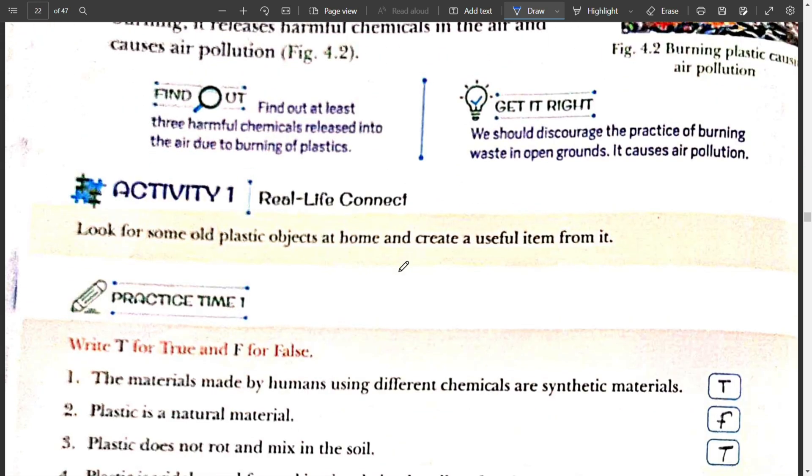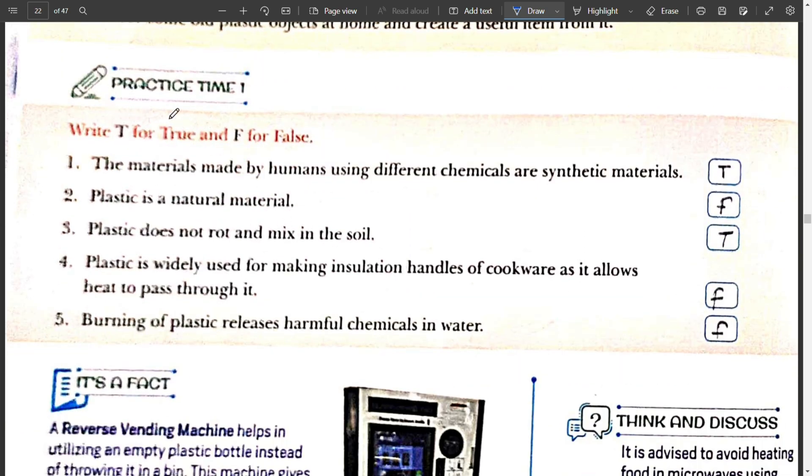Next coming to practice time 1. Write T for true and F for false. First, the material made by humans using different chemicals are synthetic materials. This is true. Plastic is a natural material. No, plastic is a synthetic material. Plastic does not rot and mix in soil. Yes, this is true. Plastic is non-biodegradable.